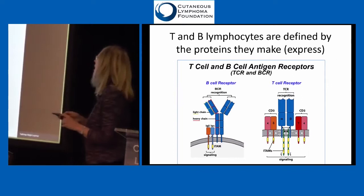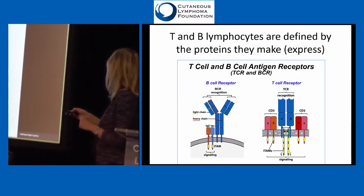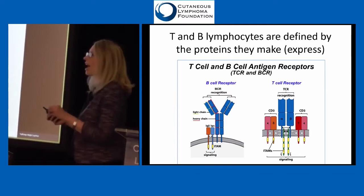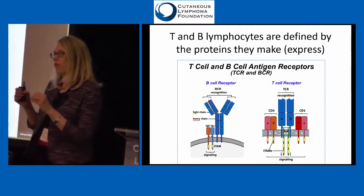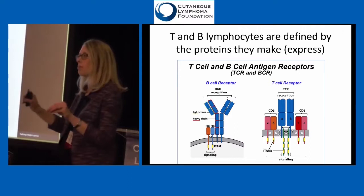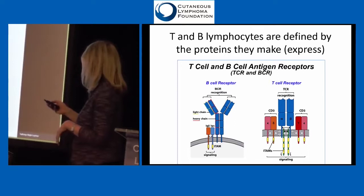T cells make a T cell receptor. B cells make a B cell receptor, which is one of these immunoglobulins. You'll see this on pathology reports — it'll talk about looking for clones of your T cell receptor. This is how we define whether you have a T or a B cell lymphoma, by looking under the microscope and seeing which of those proteins is seen on the cells.